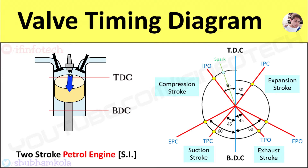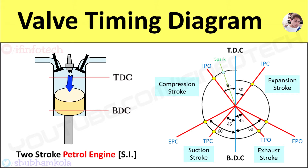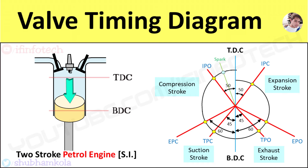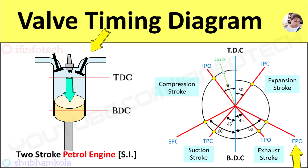The expansion stroke starts when the piston moves from TDC to BDC. During the expansion stroke, the high pressure and high temperature burned gases force the piston to perform the power stroke. This stroke is also known as the expansion or working stroke. Near the end of the expansion stroke, the exhaust port opens at an angle of 60 degrees before BDC position of the piston.